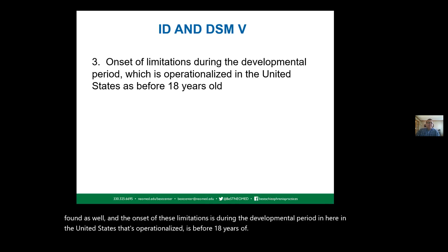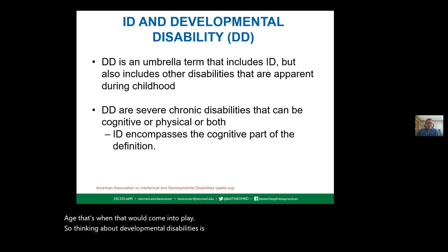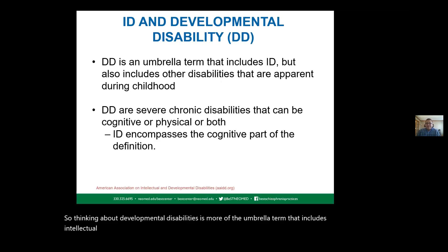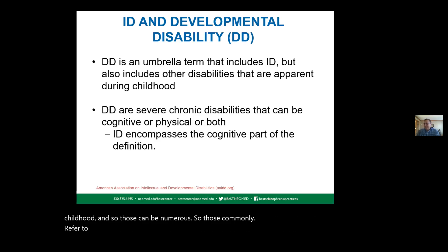The onset of these limitations is during a developmental period, and here in the United States that is operationalized as before 18 years of age. Developmental disabilities is the broader umbrella term that includes intellectual disabilities but also includes other disabilities apparent during childhood, such as autism, Tourette syndrome, and cerebral palsy.